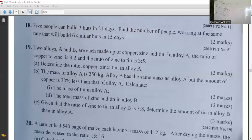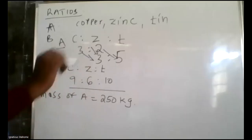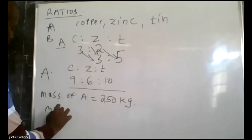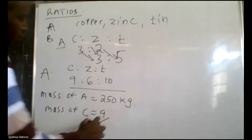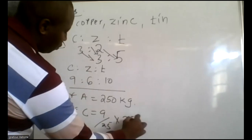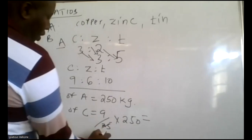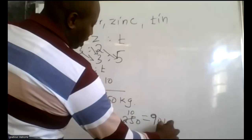The mass of alloy A is 250 kg. The total ratio is 9+6+10=25. The mass of copper equals 9/25 of 250, which gives 90 kg.